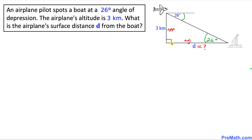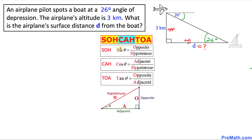Now we are going to look at this SOH-CAH-TOA chart. Here we can see trigonometric ratios and we are only interested in the TOA part. TOA means tangent: tangent equals opposite over adjacent.